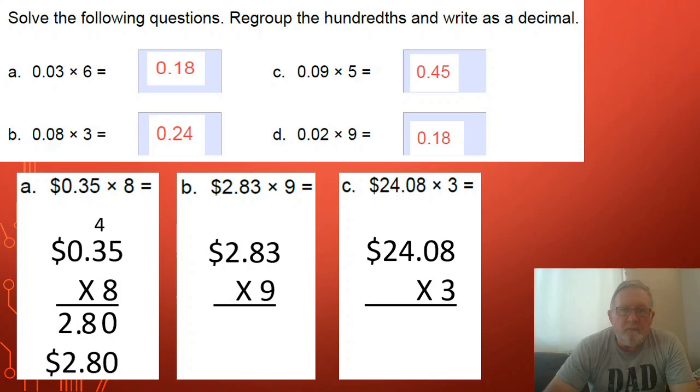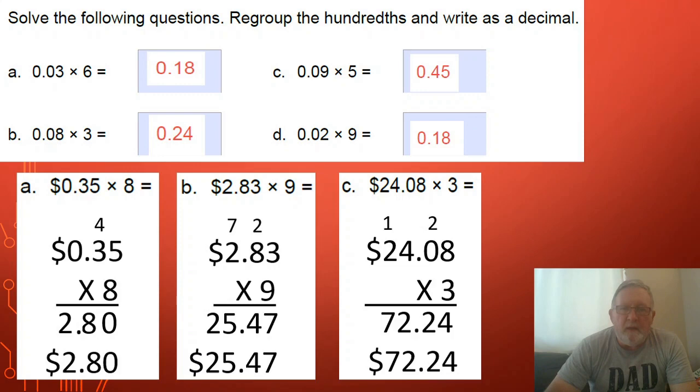Pause the video if you didn't do all three before. Let's check how you went. Two dollars eighty three multiply by nine and twenty four dollars and eight cents multiplied by three. There are our answers. Check how you went. Look at the carrying and make sure that you're carrying in the right position.